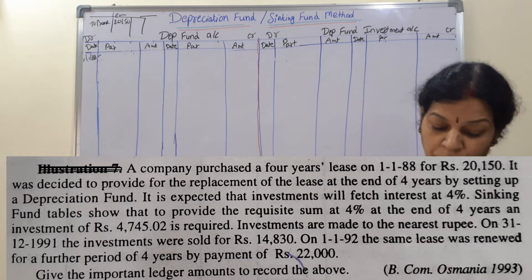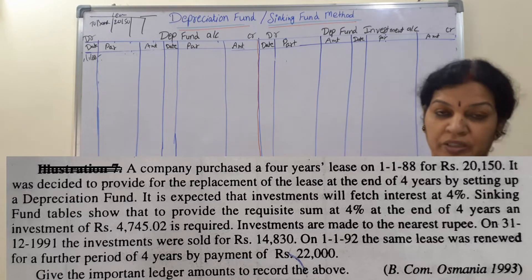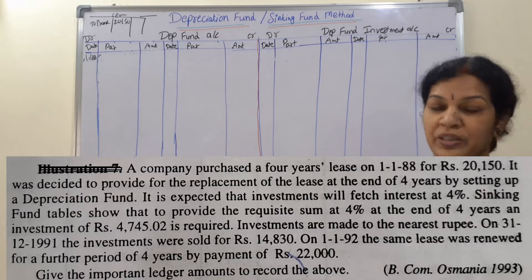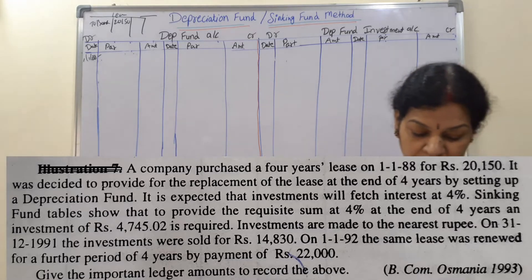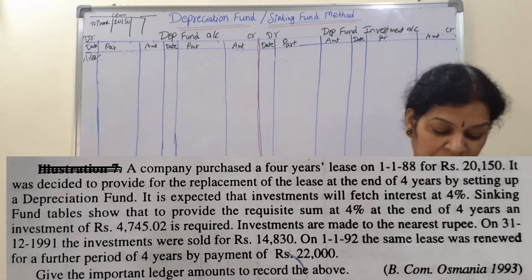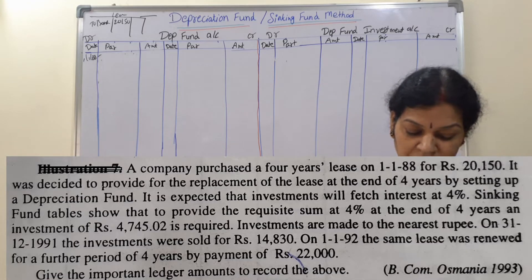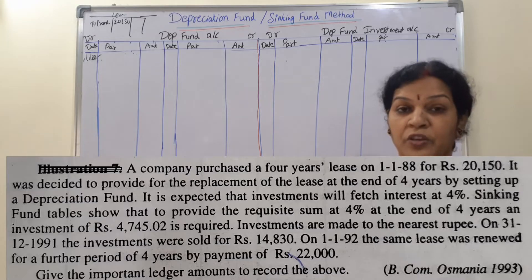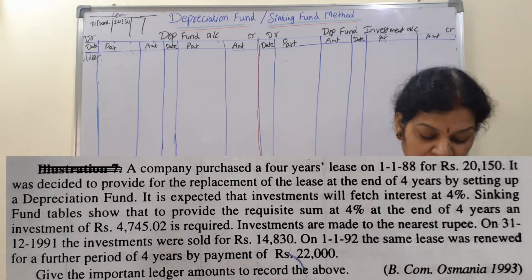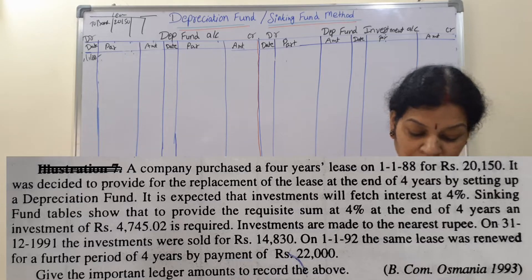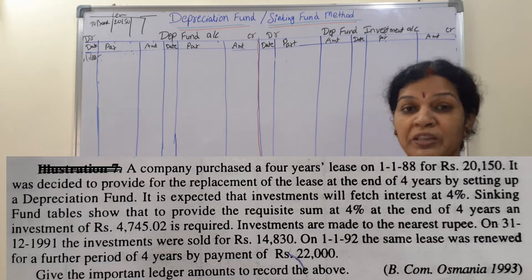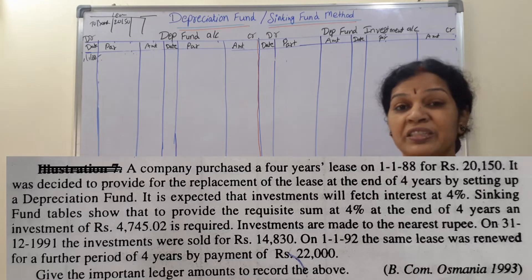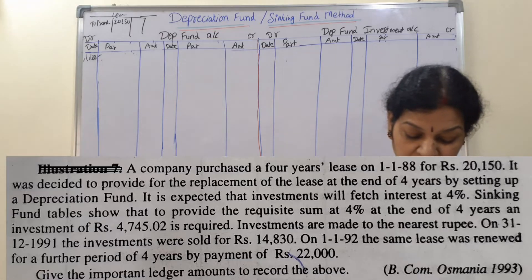It was decided to provide for replacement of the lease at the end of four years, meaning we have to prepare the fund account and investment account - depreciation fund account and depreciation fund investment account - both for four years. By setting up a depreciation fund, it is expected that investments will fetch interest at the rate of four percent.